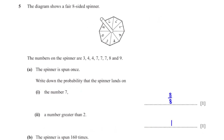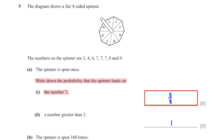The diagram shows a fair eight-sided spinner with numbers 3, 4, 4, 7, 7, 7, 8, and 9. The spinner is spun once. The probability that it lands on 7 equals the number of sections showing 7, which is 3, divided by the total number of sections, which is 8 — so the probability is 3/8.